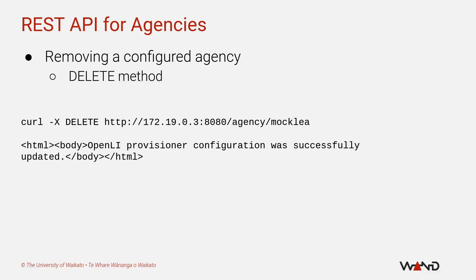If you made a typo or mistake in your API request, don't panic — skip to the next slide where I will explain how to delete an agency, delete the bad one, and then try again. Thankfully, removing an agency via the REST API is very simple. You just have to send a DELETE request to the REST API service using the URL path /agency/ followed by the agencyId you wish to delete. If your delete request is successful, you should get the same HTML back in response as you did when you added the agency.